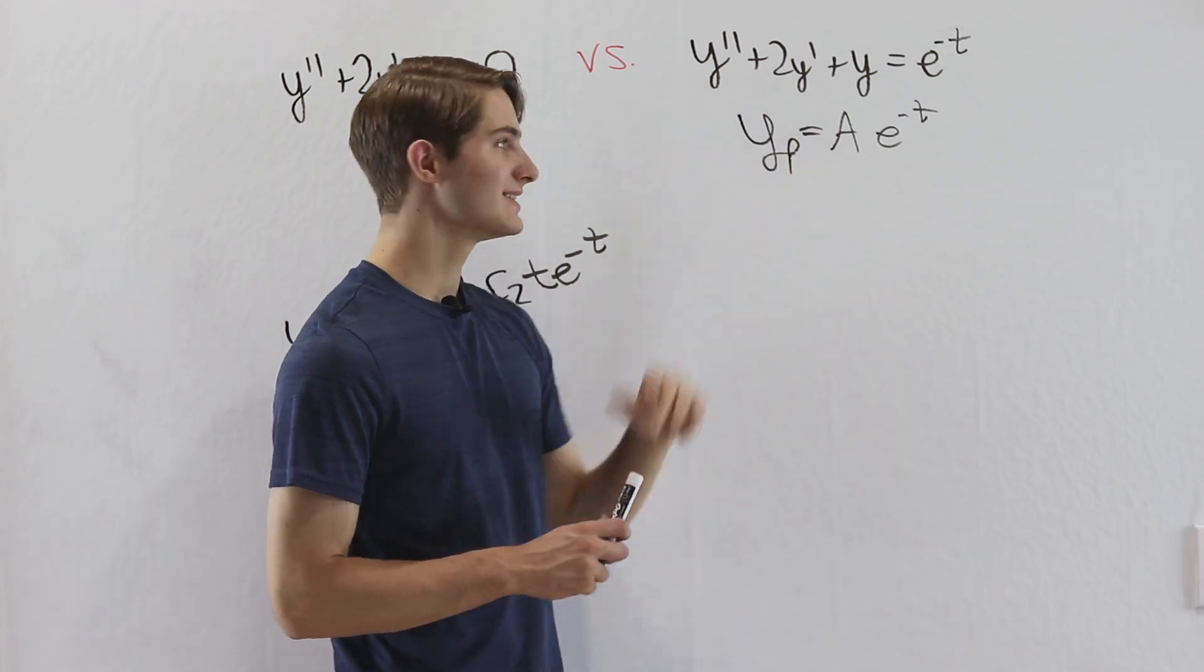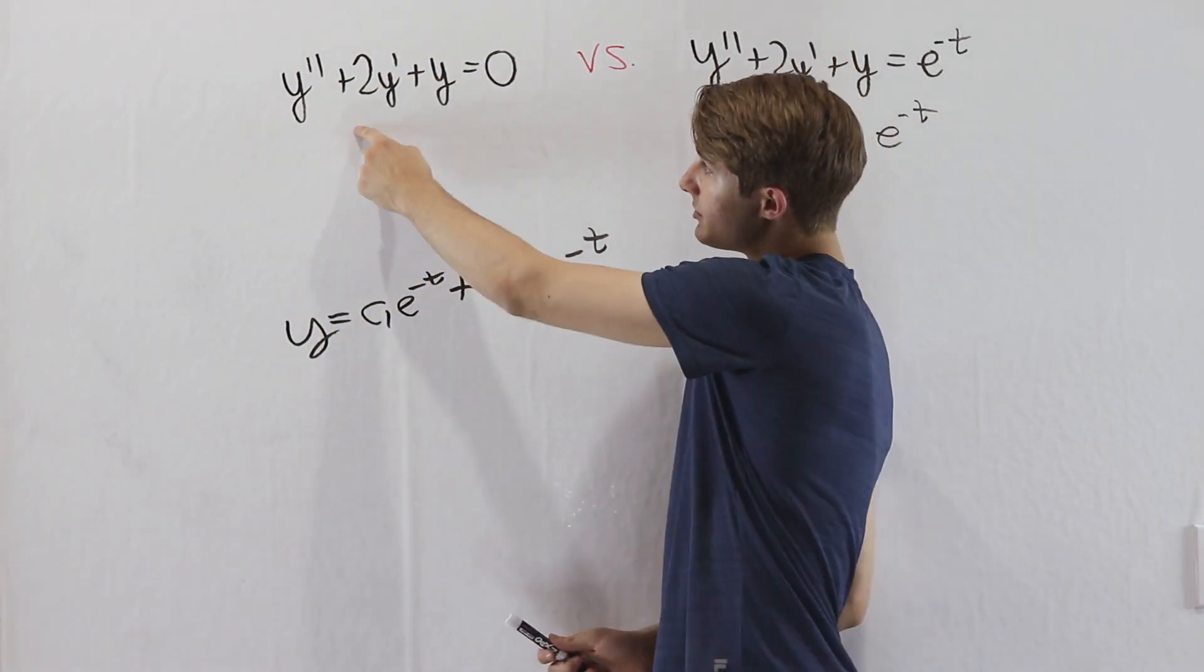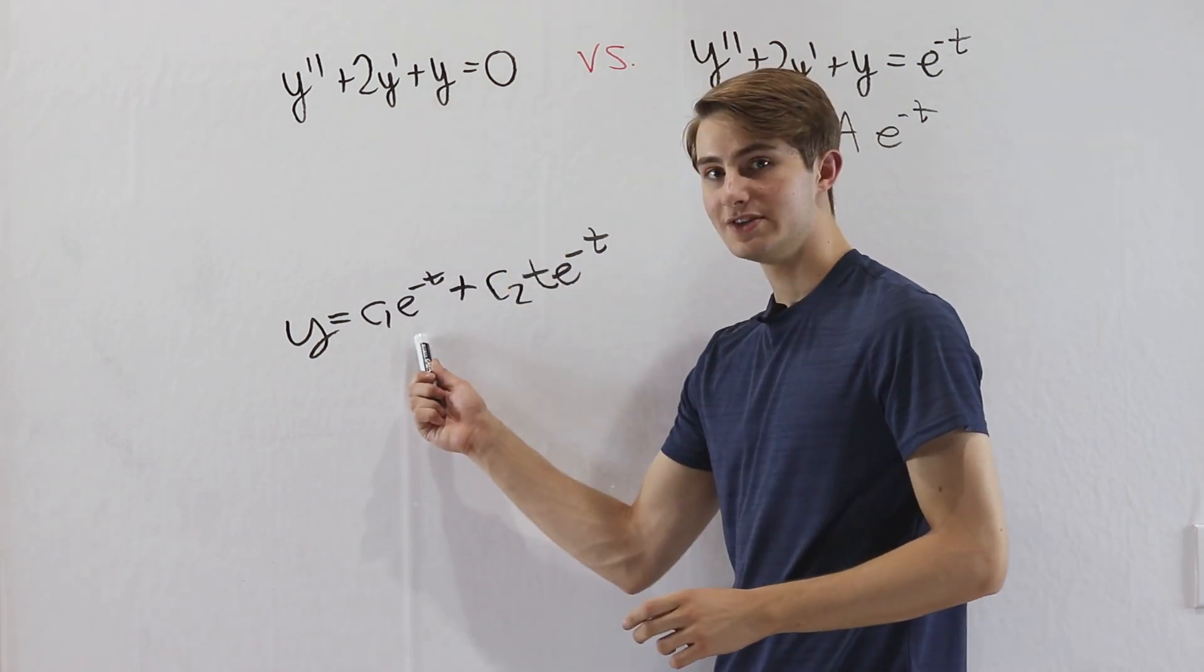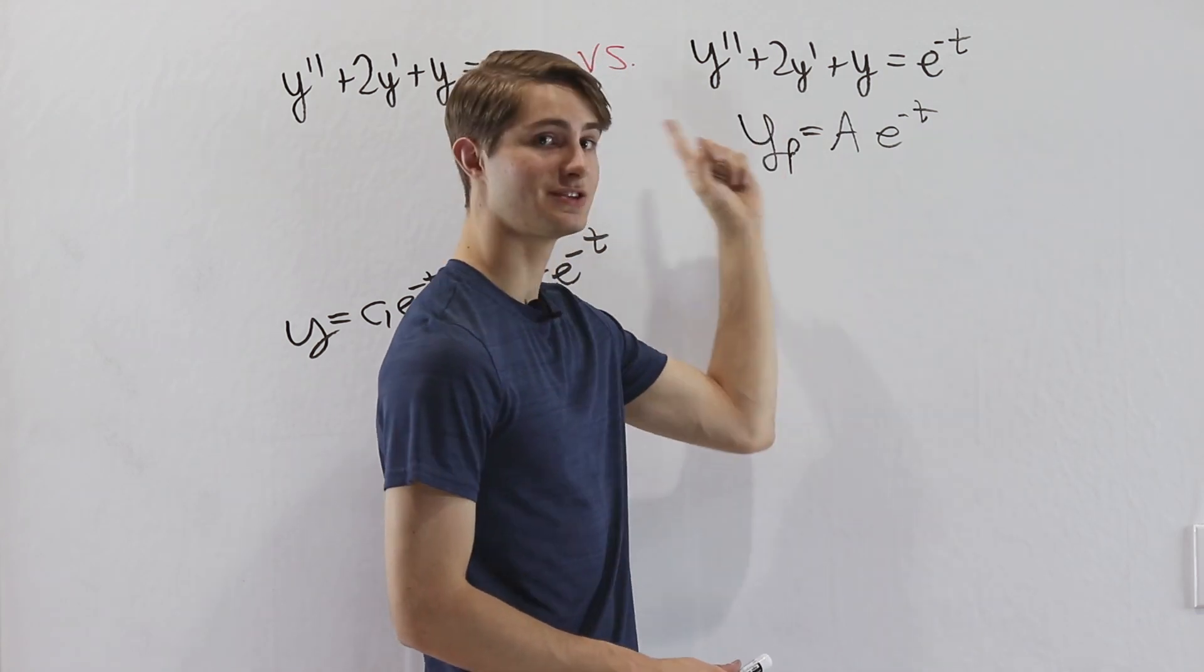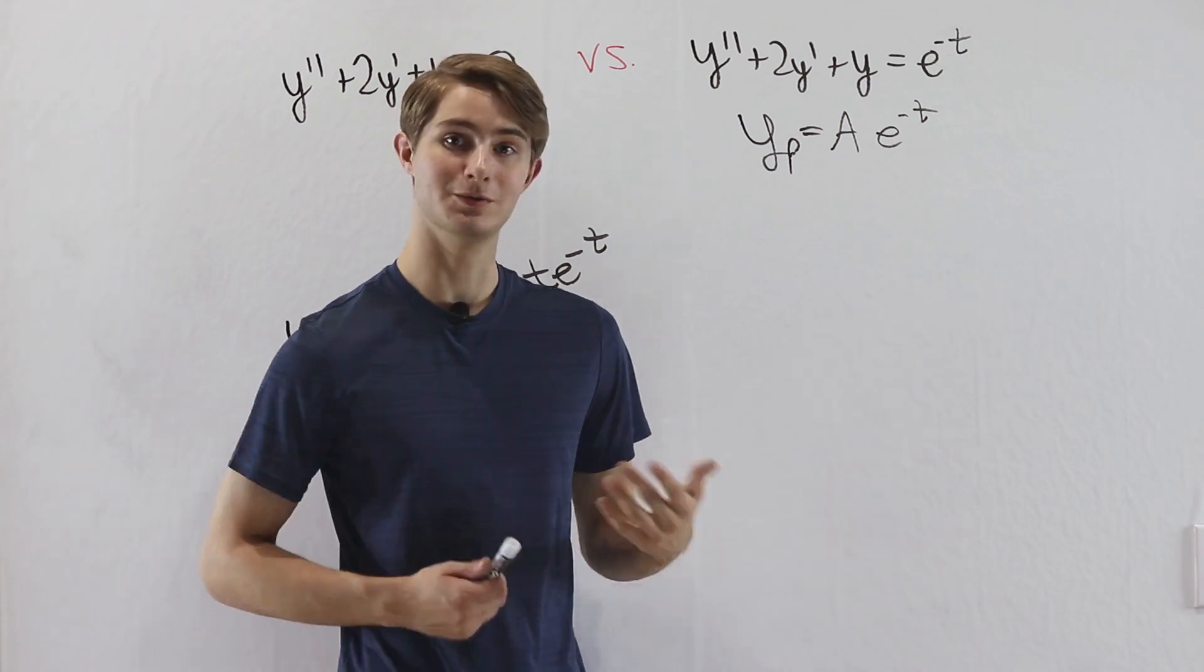And there's a problem with this guess because when we solved this equation over here, y double prime plus 2y prime plus y equals 0, e to the negative t was a solution, which means if we plug in e to the negative t to this left side, we're going to get 0, which is clearly not e to the negative t. So what will we do?